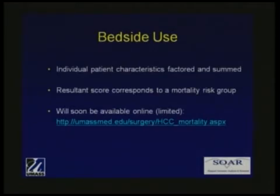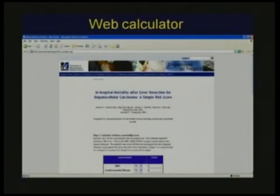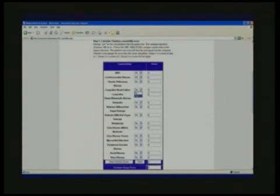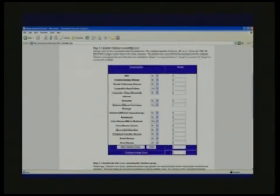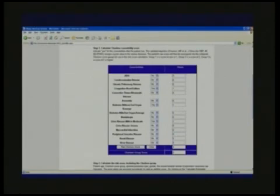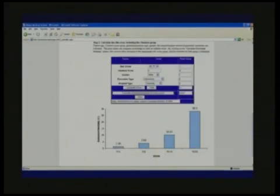We have a risk score calculator available directly by URL through our website. We can go through an example here via screenshots. The top portion is the calculation of the Charlson score, with drop-down menus for various comorbidities. If we have a patient with a history of CHF, diabetes without end-organ damage, and moderate liver disease, these elements give a Charlson score of 3, which is incorporated into the score. If our patient is a 60-year-old male planned for a lobectomy at a teaching hospital, we click Calculate Score and then Calculate Estimated Mortality, and the score is 11.